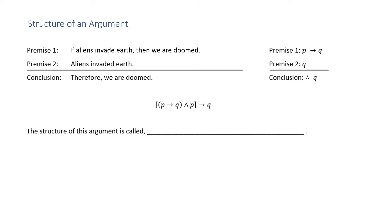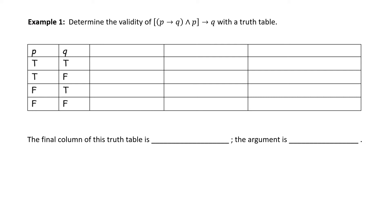This structure of the argument is called direct reasoning. Determine the validity of [(P → Q) ∧ P] → Q with a truth table. This is read: if P implies Q and P, then Q. We have a truth table template with two columns completed — under P: true, true, false, false; under Q: true, false, true, false.